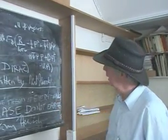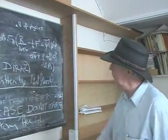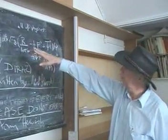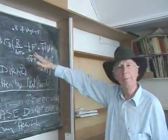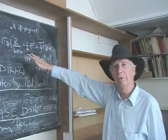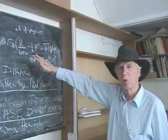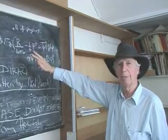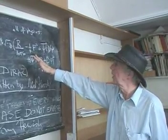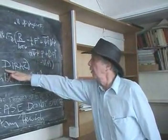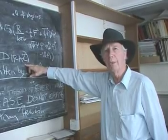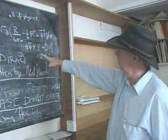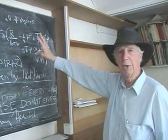This blackboard here has written on the top half of it one of the two most important equations in the history of science. One is Einstein's equation E equals mc squared, and the second is an equation by a physicist called Paul Dirac. This equation here is absolutely magical.